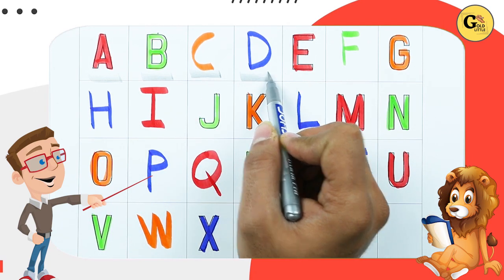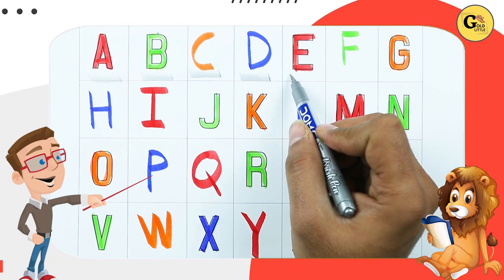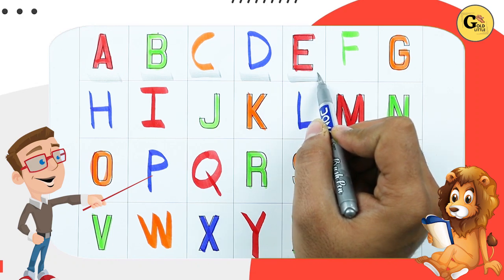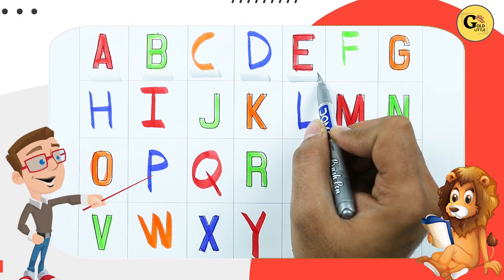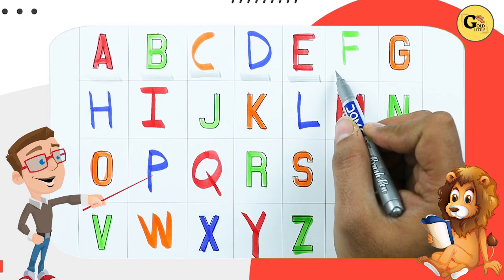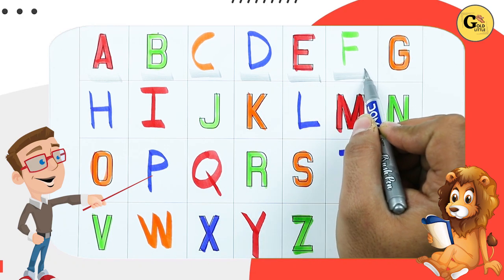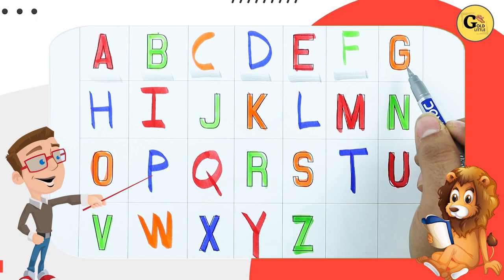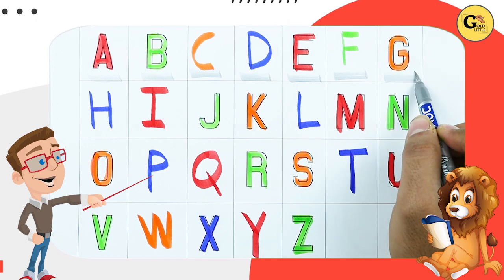D. D for dog. E. E for elephant. F. F for fish. G.